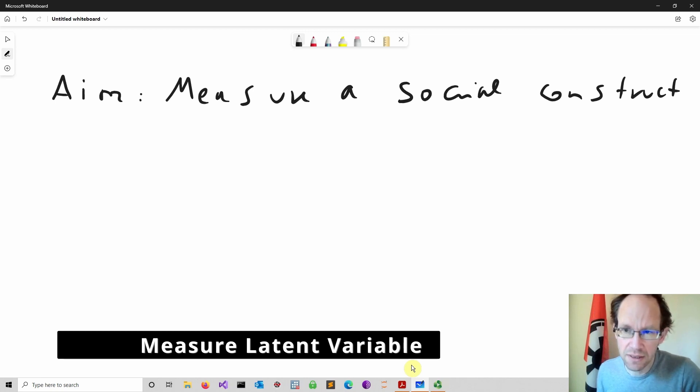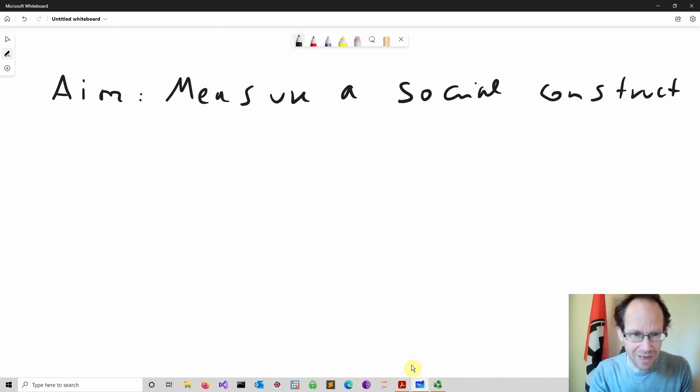Now a social construct is something which we can't easily quantify. Often you might also read the term latent variable, so latent or unobserved variable which we can't easily get our hands on.